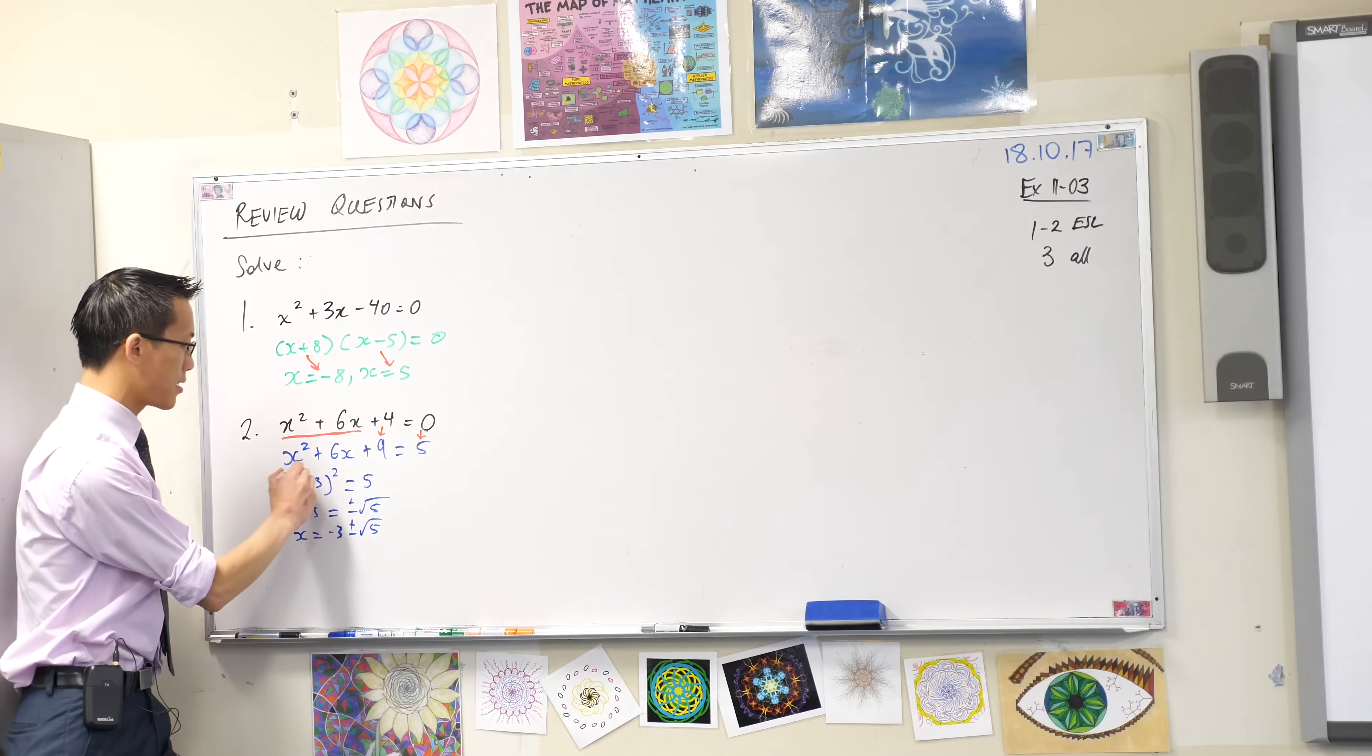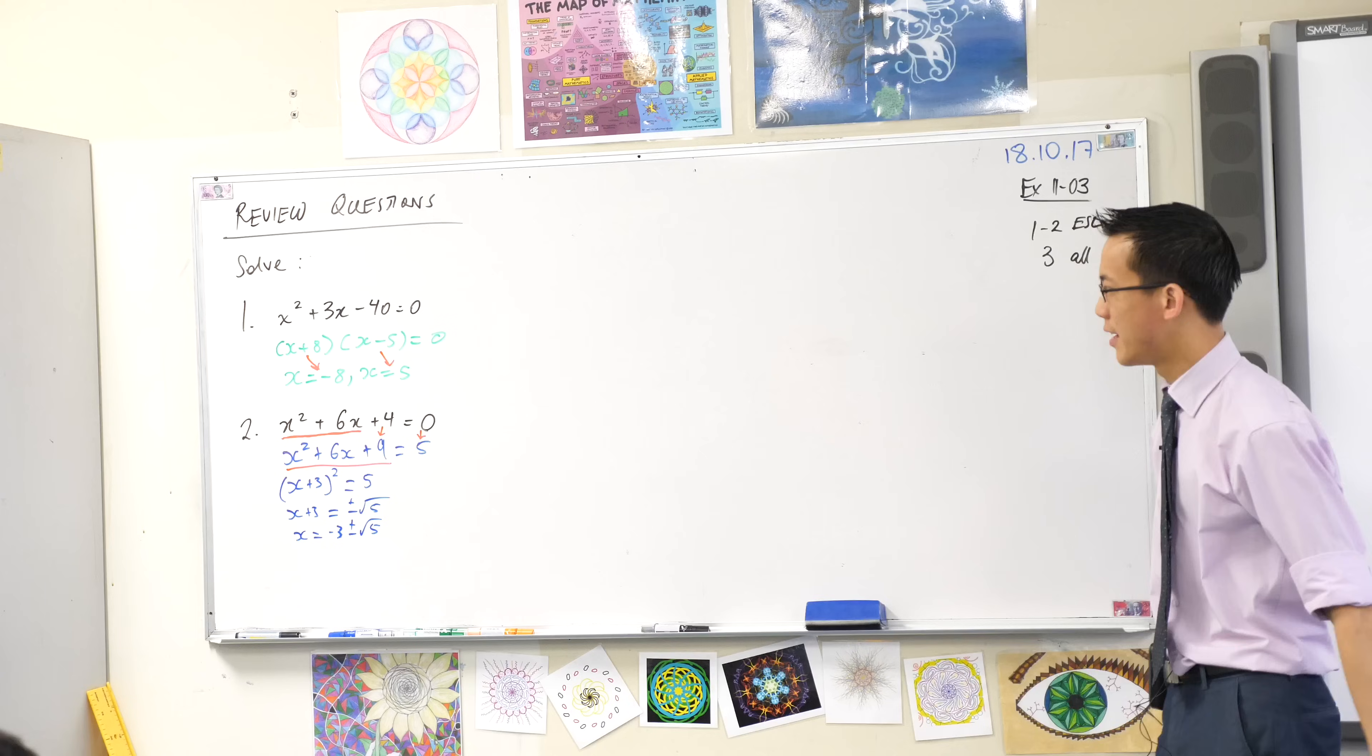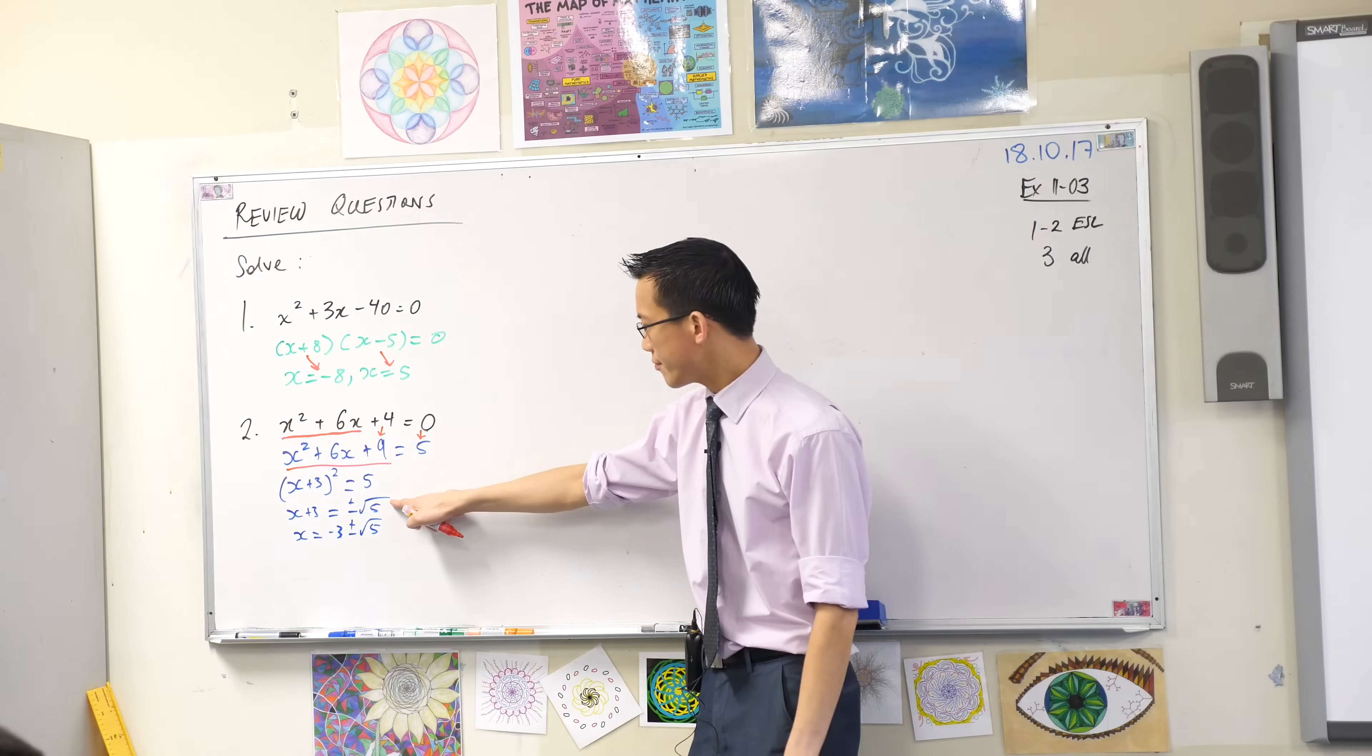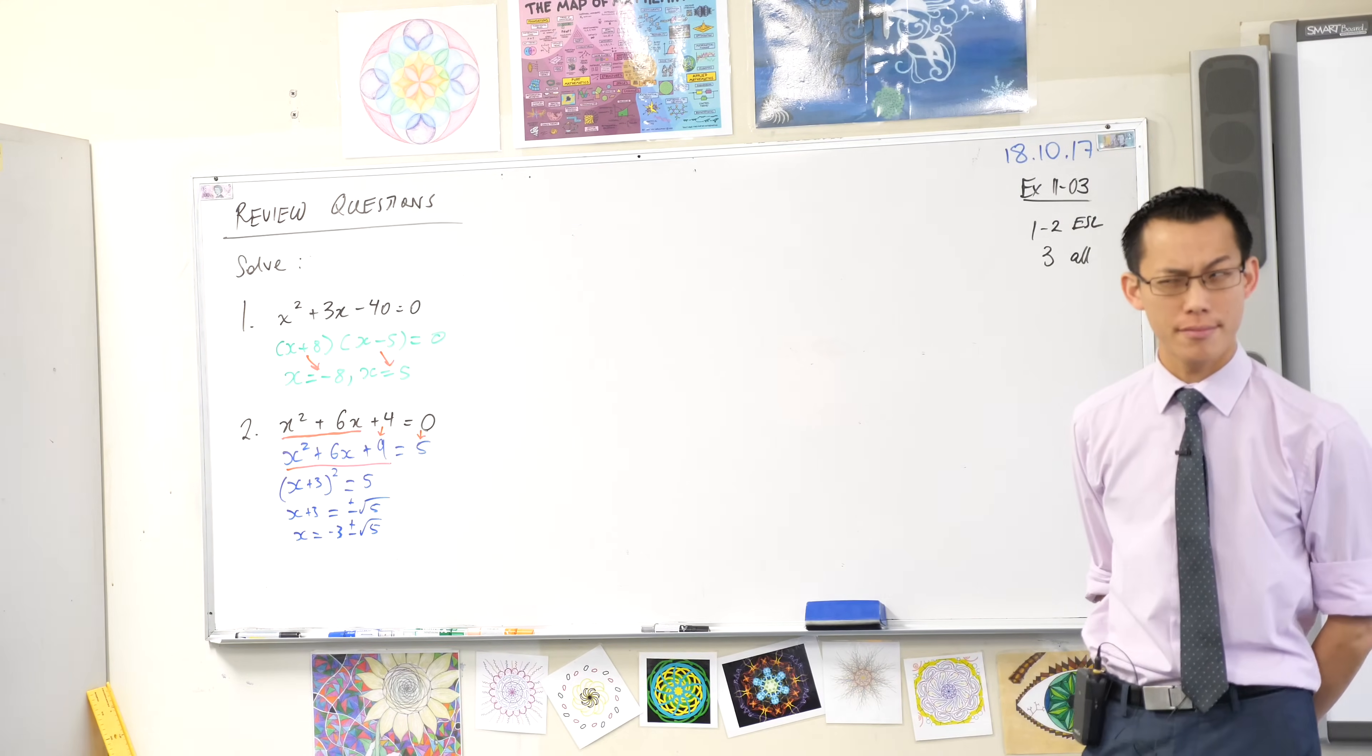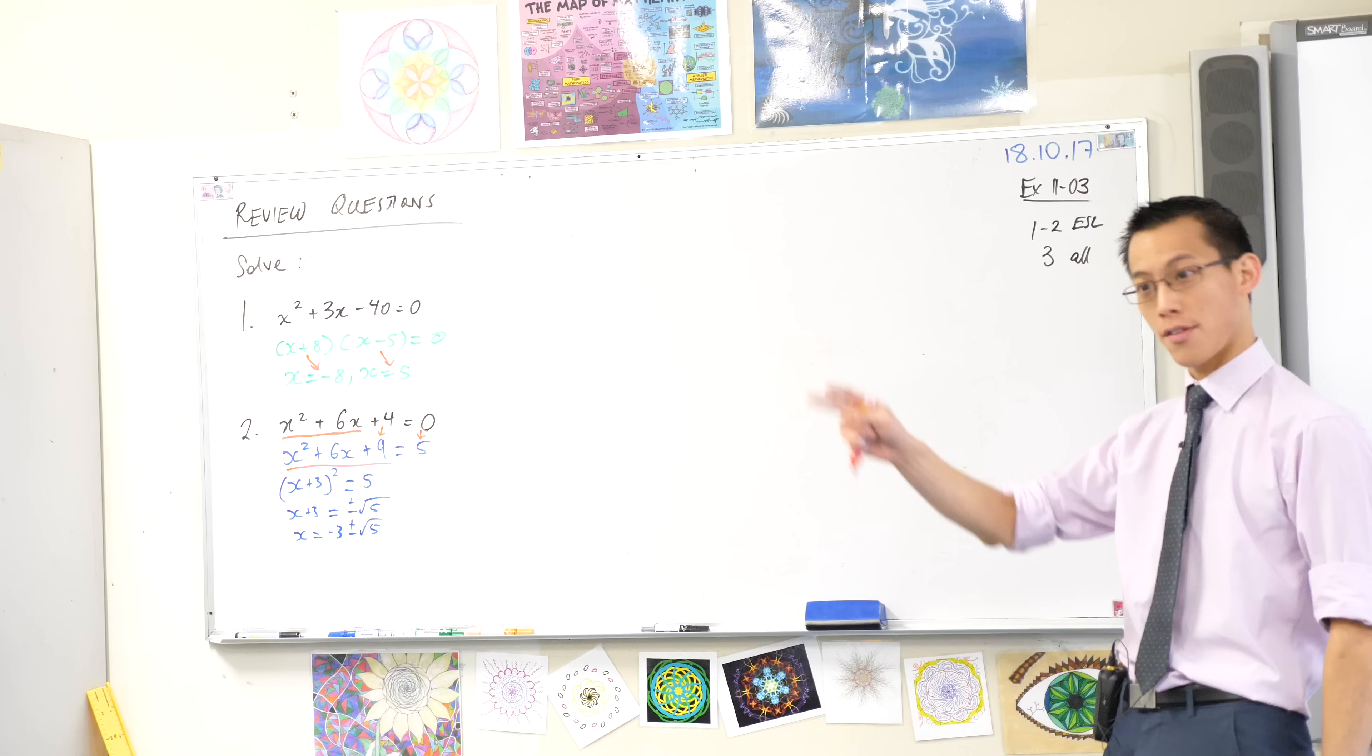And once you've got this, that's a square. Remember I said to you before it doesn't look like a square but it's an algebraic version of a square. So he's factorized it as a square. He's taken the square root and then from the second last line to the last line what has he done? Have a look carefully. What operation has he done? He has subtracted 3 from the left and from the right.